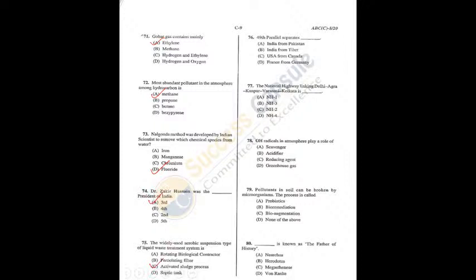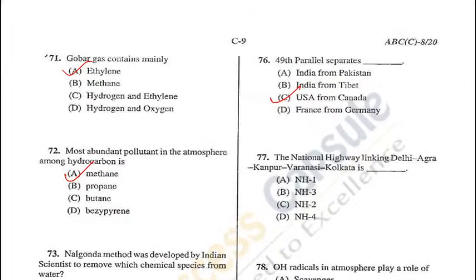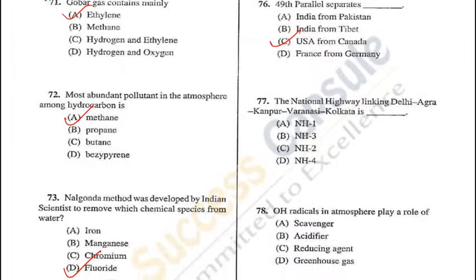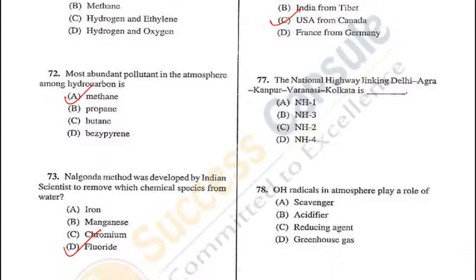Question 76: The 49th parallel separates the US and Canada — C is the correct answer. Question 77: The national highway linking Delhi, Agra, Kanpur, Varanasi, and Kolkata is National Highway Number 2 — C is the correct answer.